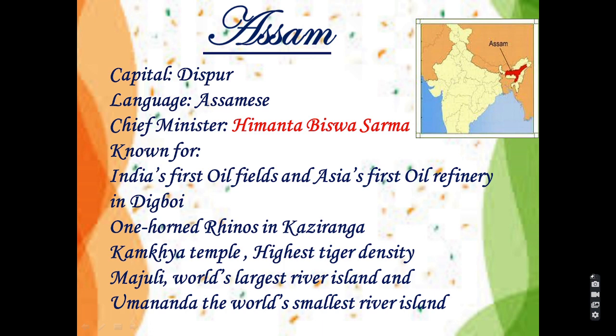Assam is also famous for Kamakhya Temple. The highest tiger density is also found here. Majuli is the world's largest river island and Umananda, the world's smallest river island, is also in Assam.